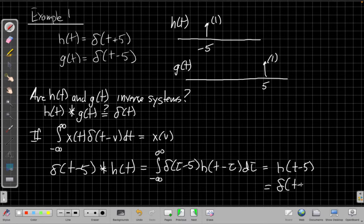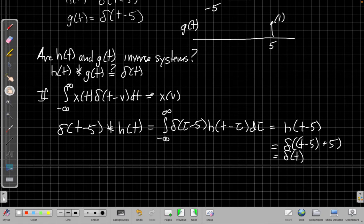So writing out the convolution in this form, I can see this integral will be zero everywhere except where tau equals five, and then I put this in for tau equals, I get h(t minus five), and putting in t minus five, I get t minus five plus five when I plug in the equation for h up here, and they cancel, giving me delta(t).